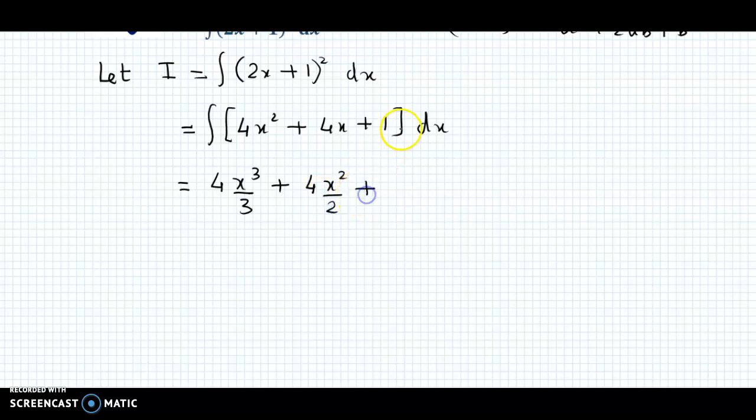Plus the integration of 1 is x plus c. Further we simplify and obtain (4/3)x³. Plus, this would be reduced as 2x² (since 4/2 = 2), so we have (4/3)x³ + 2x² + x + c. This is the required integral value.